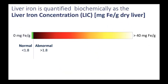Liver iron is measured biochemically as something known as the liver iron concentration, or LIC. The units of that are milligrams of iron per gram of dry liver weight. The LIC can range from zero all the way to greater than 40 milligrams of iron per gram, and the demarcation between normal and abnormal is about 1.8.